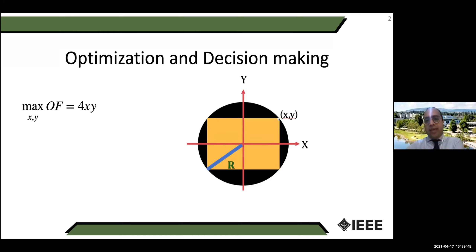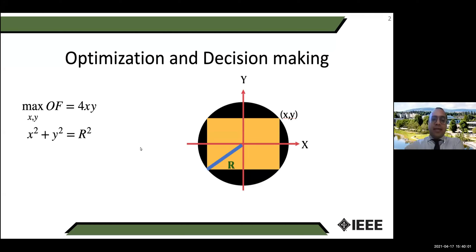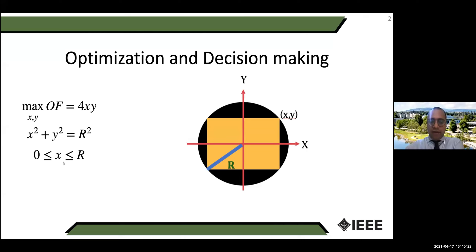This gives you the idea of what the decision-making variables x and y are. Next, x and y should be on the circle, so I have to write a mathematical expression saying x and y are located on the circle: x² + y² = r². Also, x cannot exceed the radius r, and y the same. So I have three constraints, one objective function, and some decision variables to find the optimal value. This is optimization and decision making in a very simple way.